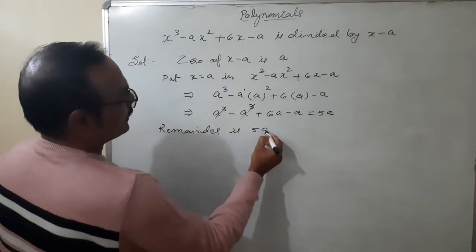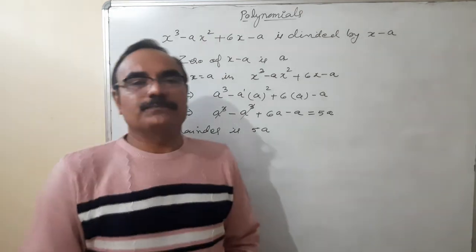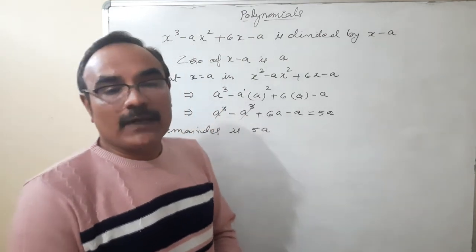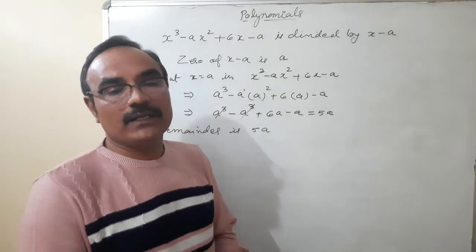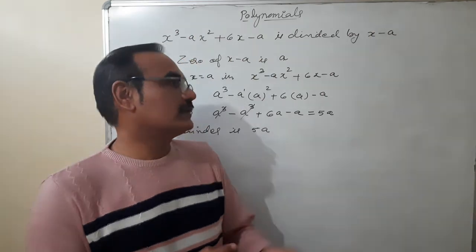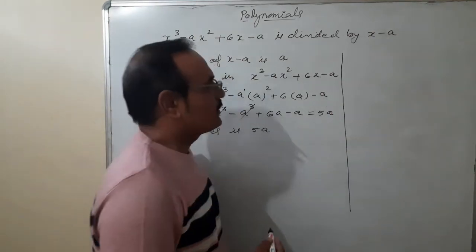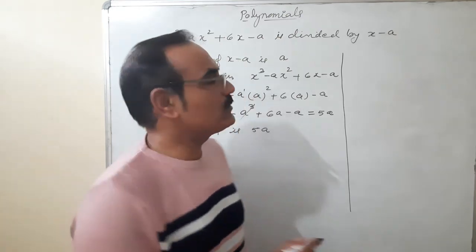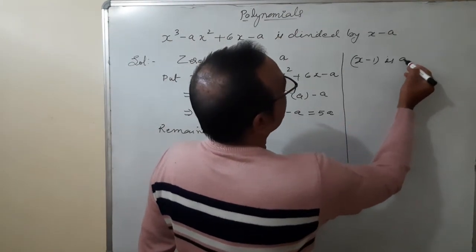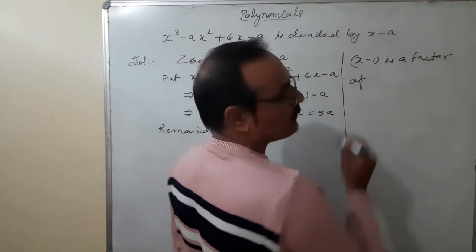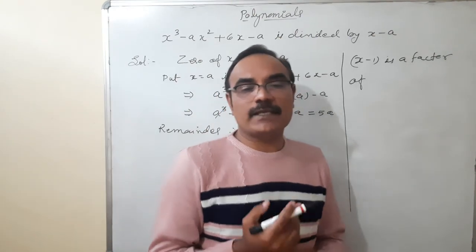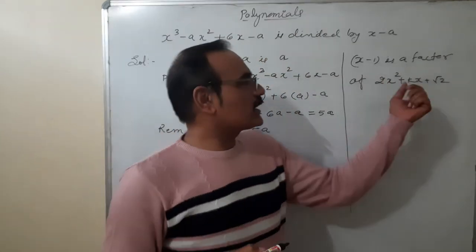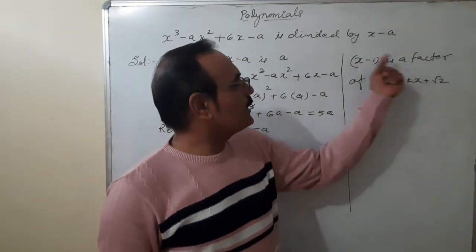So the remainder is 5a. That is the use of the remainder theorem. Now using the factor theorem: find the value of k if x minus one is a factor of 2x² plus kx plus root 2. In this question it is clearly mentioned that x minus one is a factor of this polynomial.